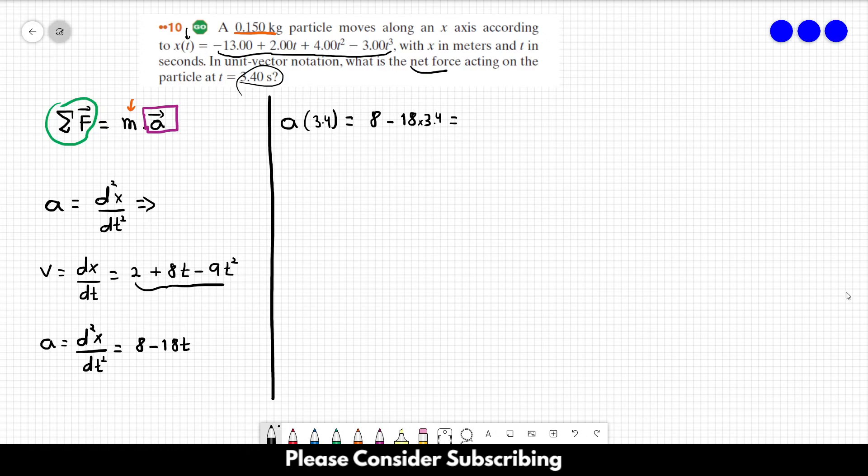Let's make this calculation. This equals 8 - 18 × 3.4, which gives us -53.2 meters per second squared. This is the acceleration of the particle when t = 3.4 seconds.